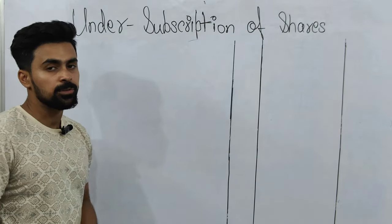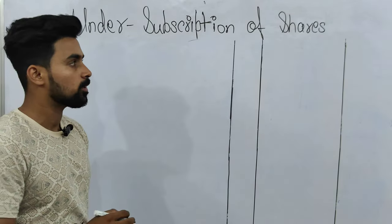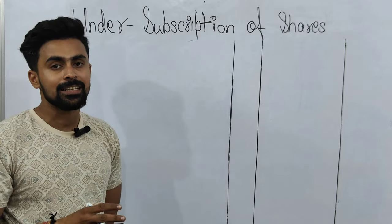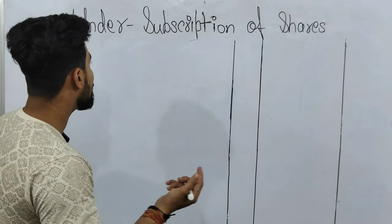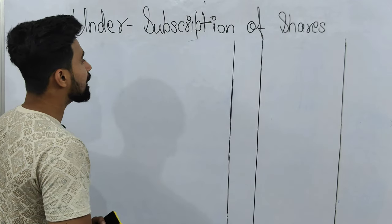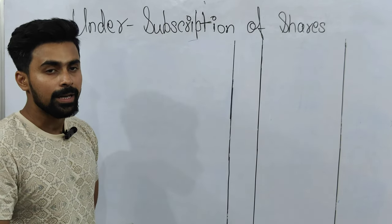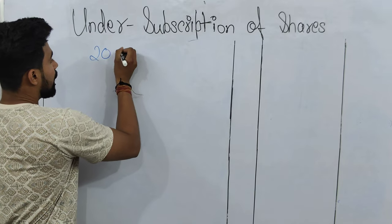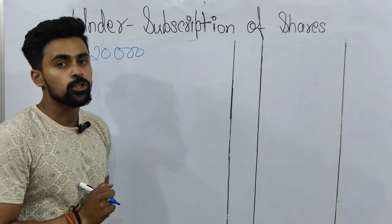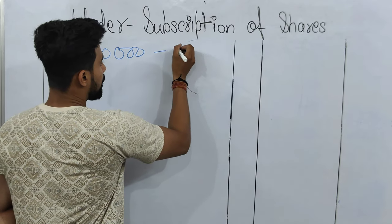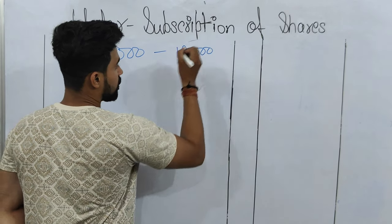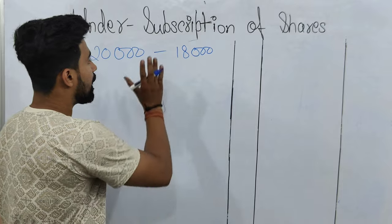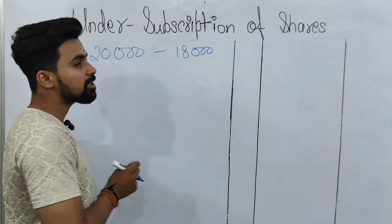Now let's start the topic of under subscription of shares. Under subscription of shares means sometimes it happens that the number of shares applied by the public is less than the number of shares issued by the company. In other words, the public applied for fewer shares than the company offered. For example, a company issued 20,000 shares for the general public, but the public applied for only 18,000 shares — this is a case of under subscription.